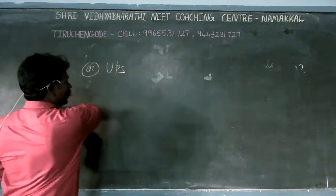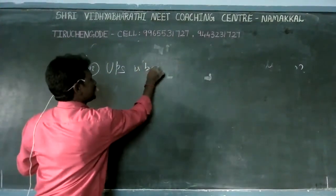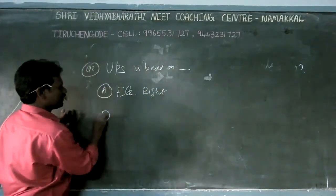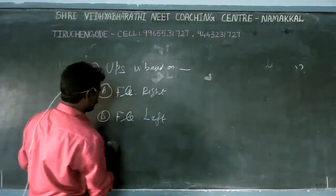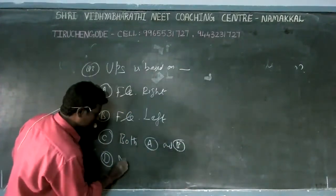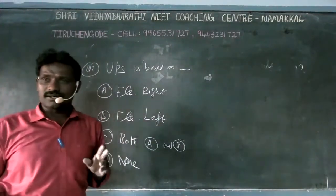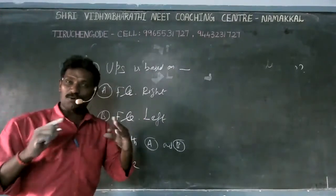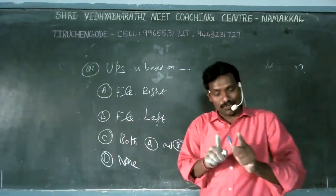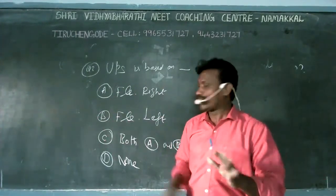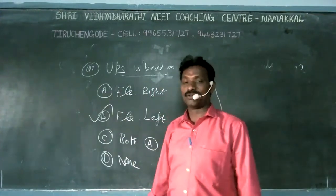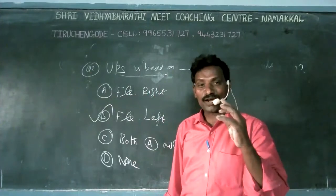One important question: UPS — uninterruptible power supply — is based on which rule? First option: Fleming's right-hand rule. Second option: Fleming's left-hand rule. The answer is Fleming's left-hand rule, because UPS is not a generator. UPS does not produce current; it is not a generator. Therefore, UPS is based on Fleming's left-hand rule.